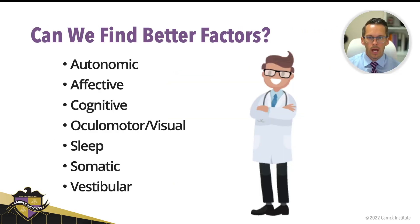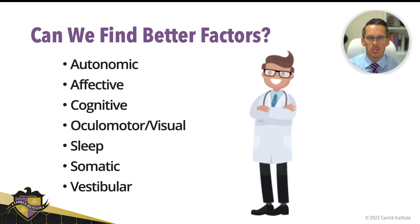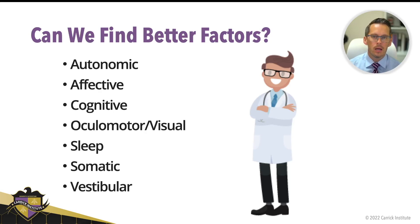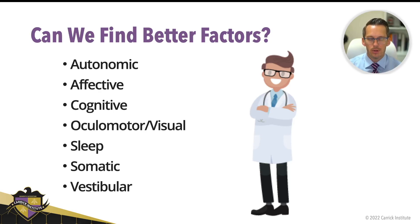So when I look at patients with concussions, I always ask myself: can we do better? Can we find better factors? And here have been my observations — and this is what the Functional Neurology Management of Concussion course is all based upon. It's based on these seven different phenotypes: autonomic, affect, cognitive, ocular motor and visual, sleep, somatic, and vestibular.